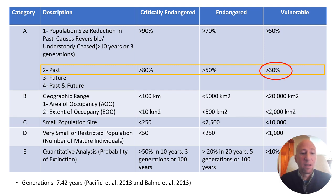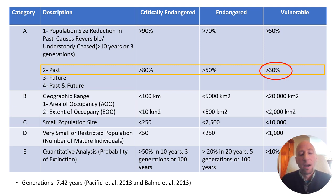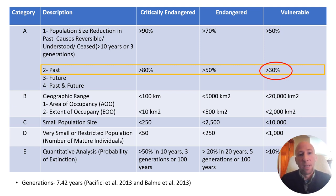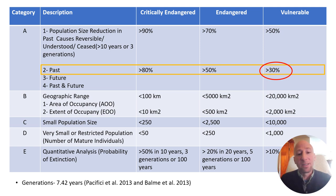A2 looks at past population size reduction where causes may or may not be reversible, understood, and may or may not have ceased in that period. A3 is projecting into the future. A4 looks at past and future combined, with reductions of 80% or greater for Critically Endangered, 50% for Endangered, and 30% for Vulnerable. Looking at the status of leopards now, we listed them as Vulnerable in 2016 using Criteria A2, stating that they've been reduced by greater than 30% over the last three generations.